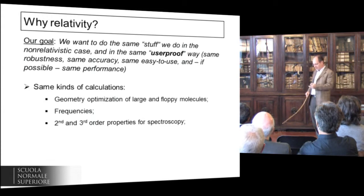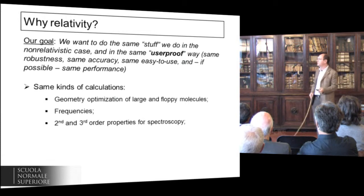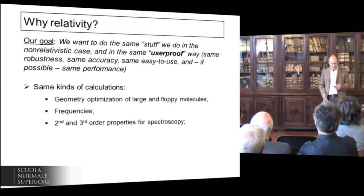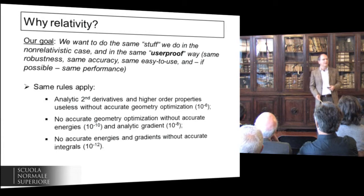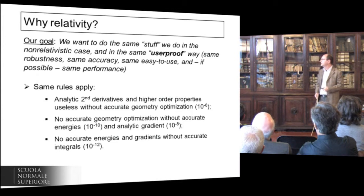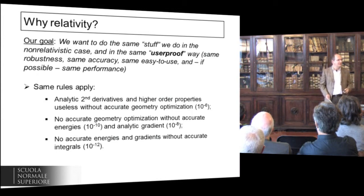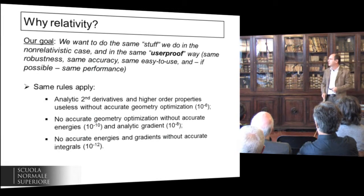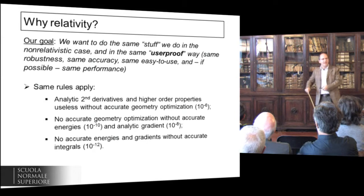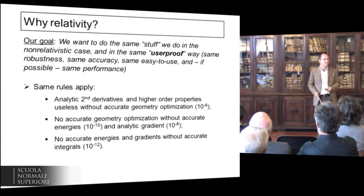We want to do geometry optimization of large and floppy molecules, compute frequencies, second derivatives, and all the properties for various spectroscopies. The same rule applies: if you want an anharmonic spectrum, you need a certain kind of accuracy on the second derivative — say 10⁻⁶. That means you need to reach the minimum using a gradient accurate to 10⁻⁸, which means the energy needs to be accurate to 10⁻¹⁰, and the integrals to 10⁻¹². There's no way around this.